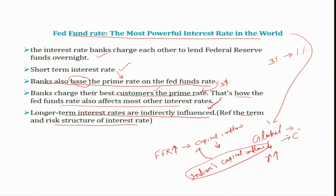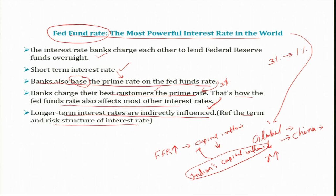Similarly, other countries like China also respond, because when the FFR is increased there is a risk of capital outflow. In order to counter this, other countries also start increasing their interest rates. The Fed fund rate therefore not only impacts the US itself, but also has a significant impact on the rest of the world and the global economy.